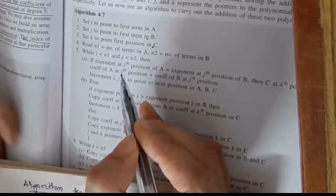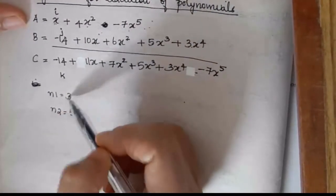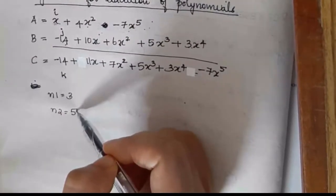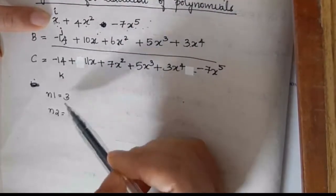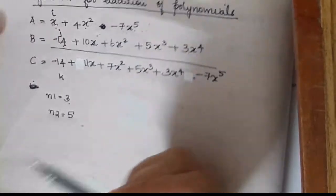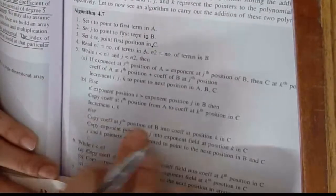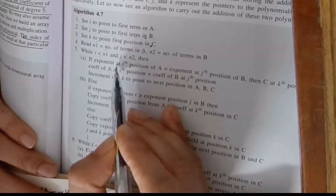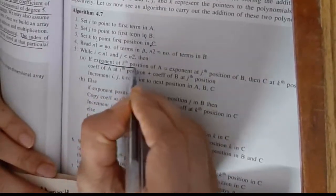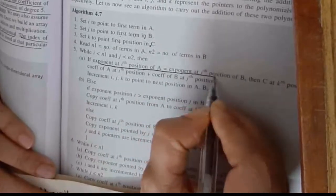If the exponent at the i-th position in A equals the exponent at the j-th position in B, then the exponents are the same, so you add the coefficients and put the result into the k-th position in C, then increment i, j, and k. Otherwise, check if the exponent at position i is less than the exponent at position j in B.